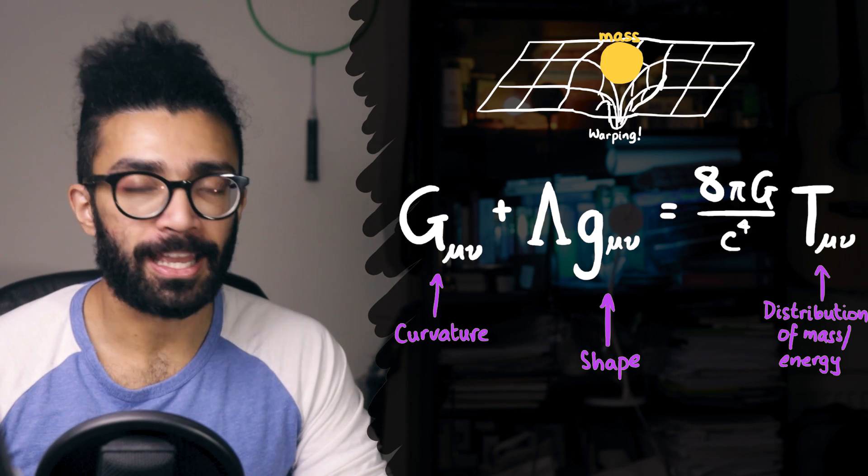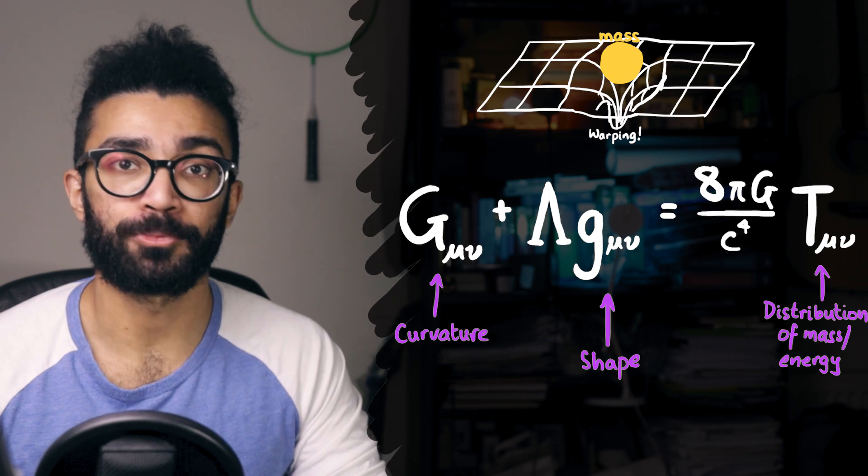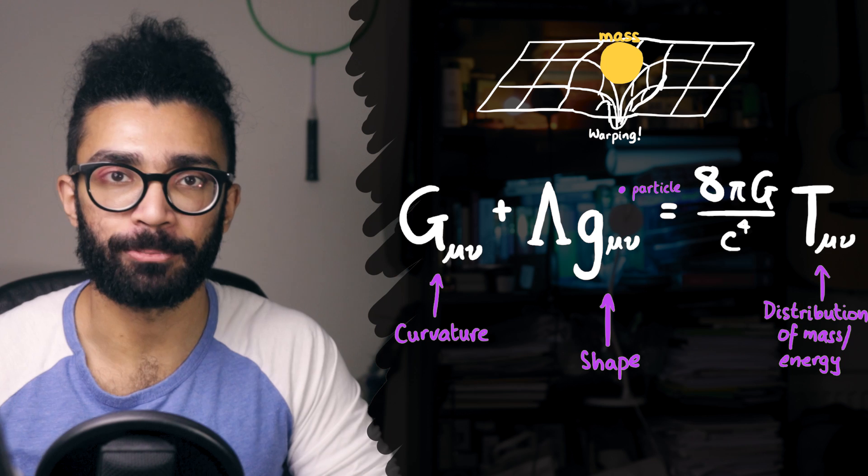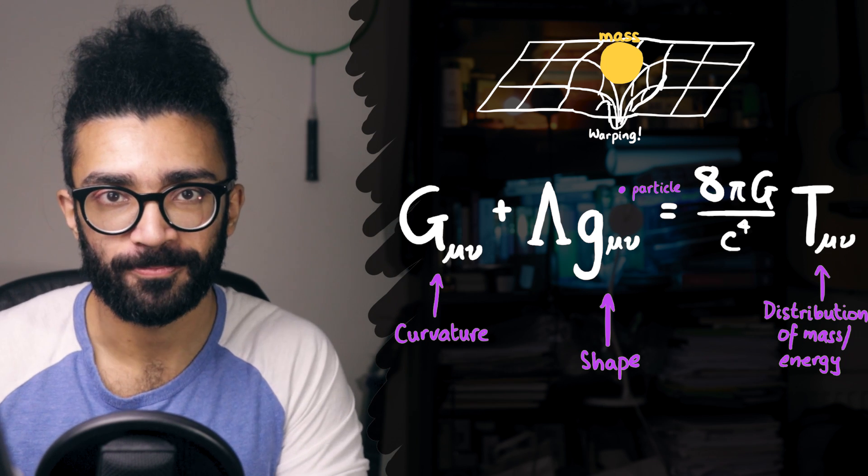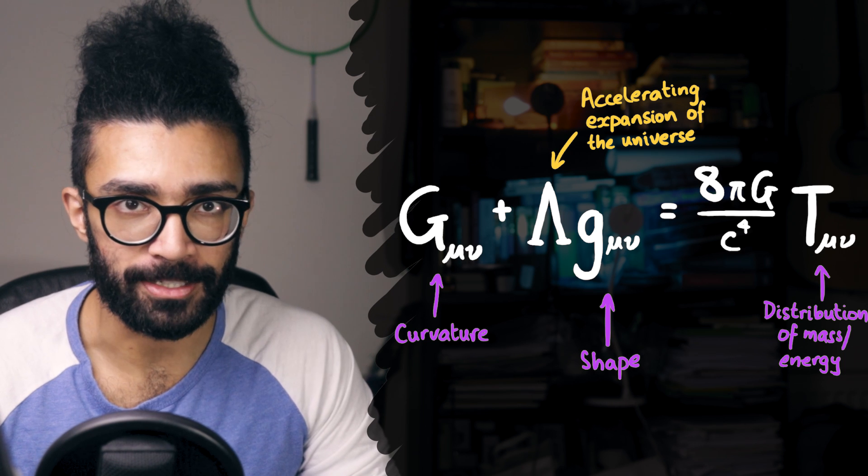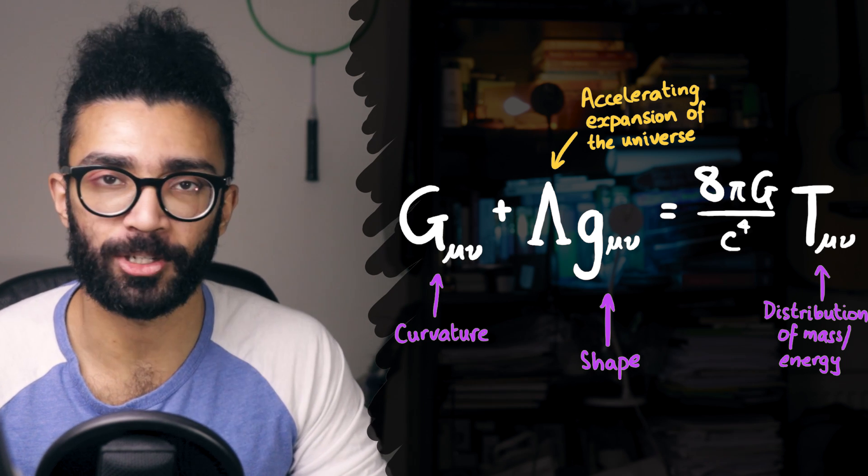They essentially relate the shape and curvature of spacetime to the distribution of mass and energy within it. Therefore, they tell us exactly how mass or energy causes spacetime to warp, and consequently how this warping results in mass and energy behaving in that warped spacetime. It also accounts for the fact that the expansion of our universe seems to be accelerating using the lambda or cosmological constant term.